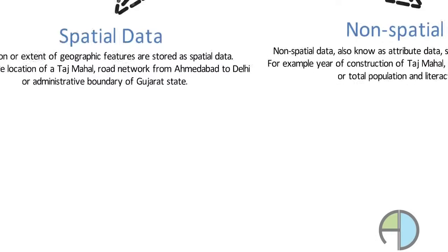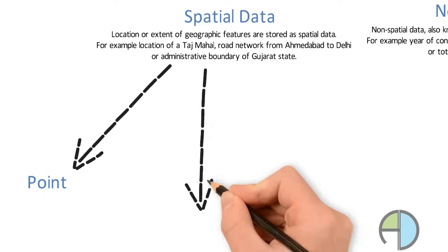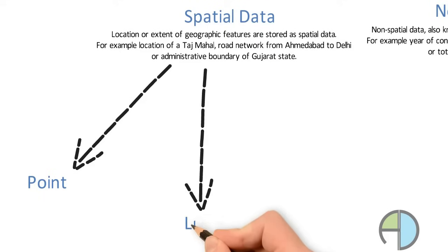Spatial data can further be divided into three different types of objects. It can be point, line or a polygon. These are the three components of a spatial data.